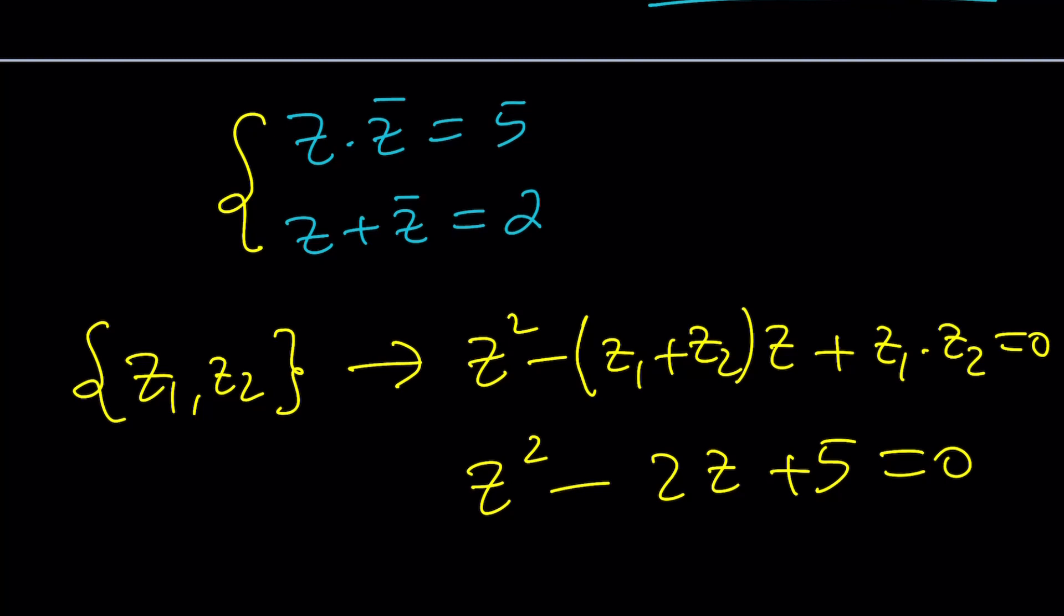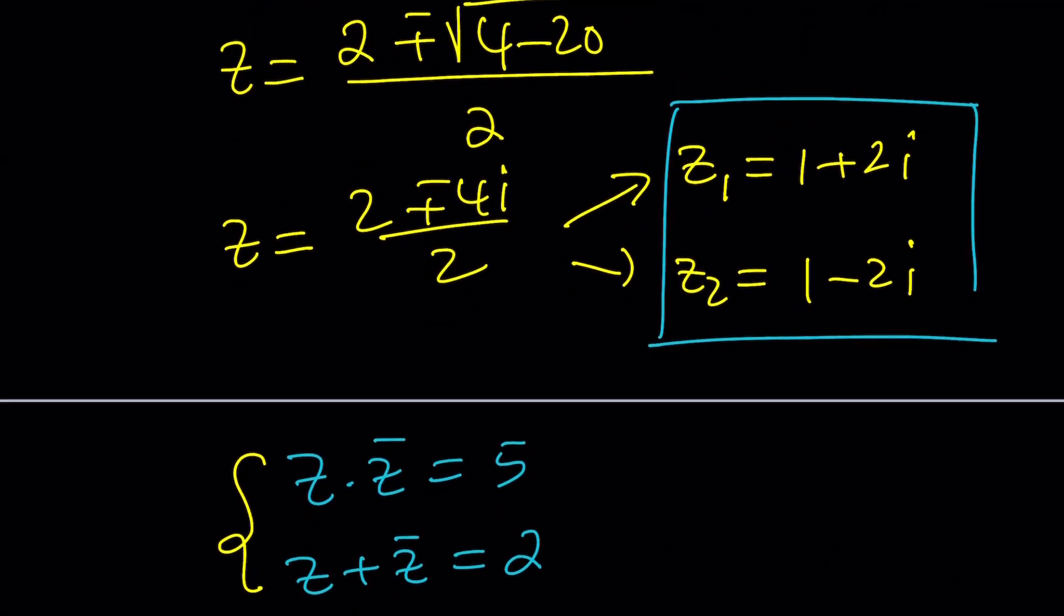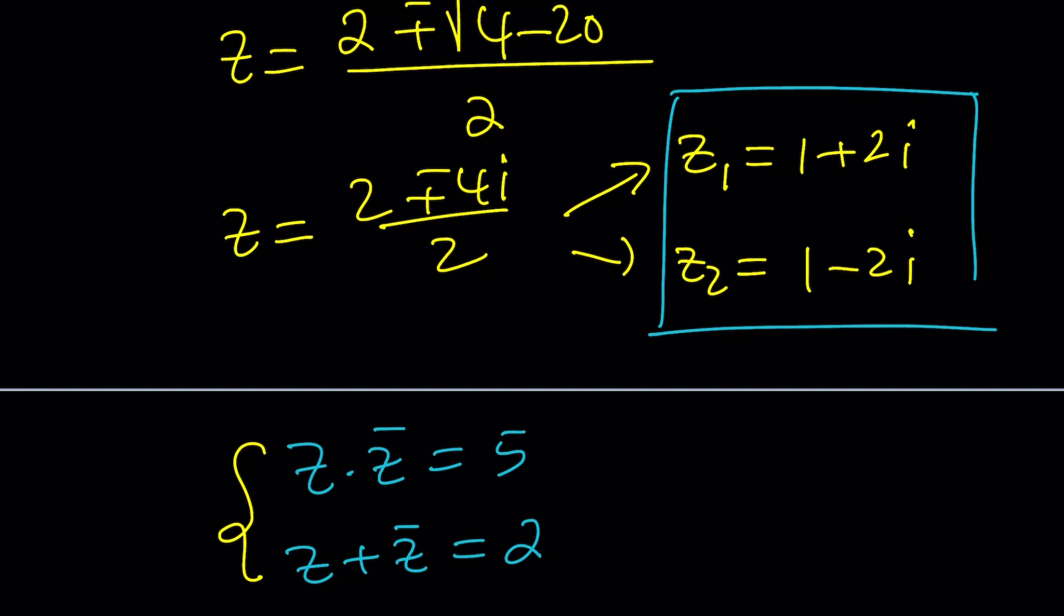If you solve for Z you're going to get 1 plus 2I and 1 minus 2I. Make sense? Okay great. So we get the same answer no matter what.